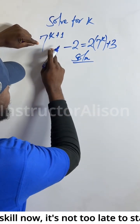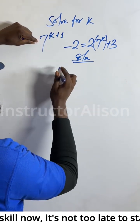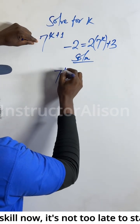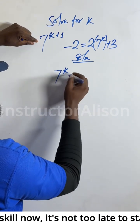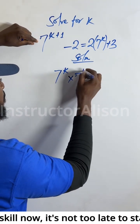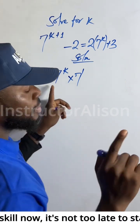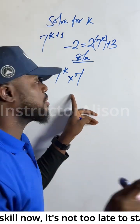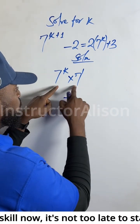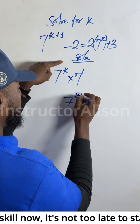I want to start with this first guy. This first guy will carry k plus 1. I want to split them. They are 7 to the power of k times 7 to the power of 1. Now it's the same thing as this guy. The product law of indices says anytime the base is the same, take one of the base and add the powers.